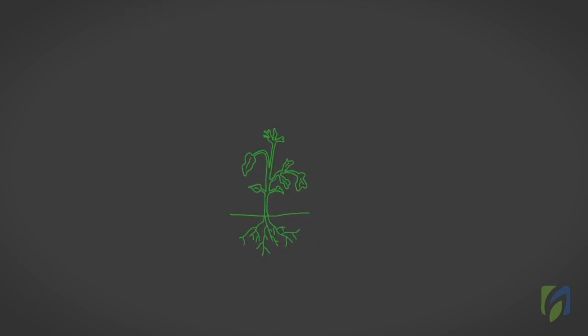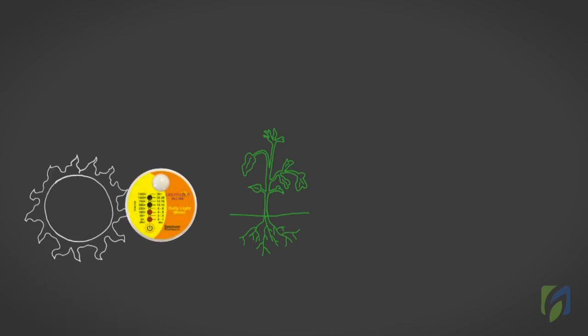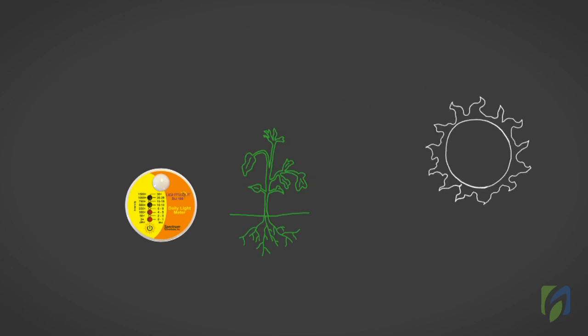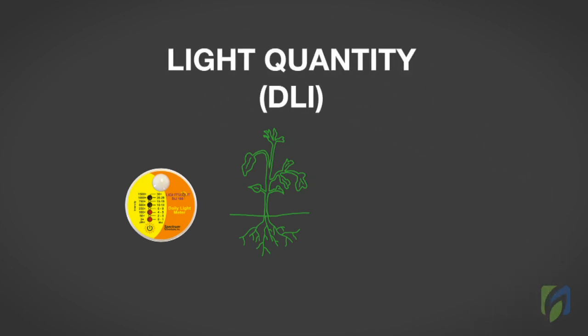For plants, if you want to determine how much light is available for plant growth, you would place a light sensor on the greenhouse bench and capture the light particles or photons delivered to a particular spot in a 24-hour period. This light measurement value is the light quantity, or DLI.